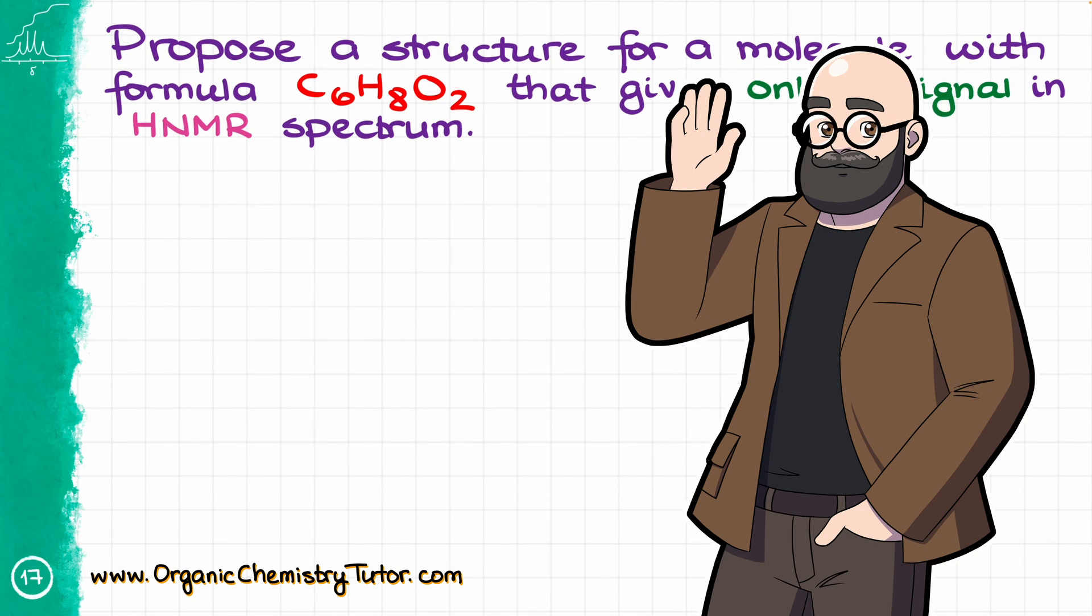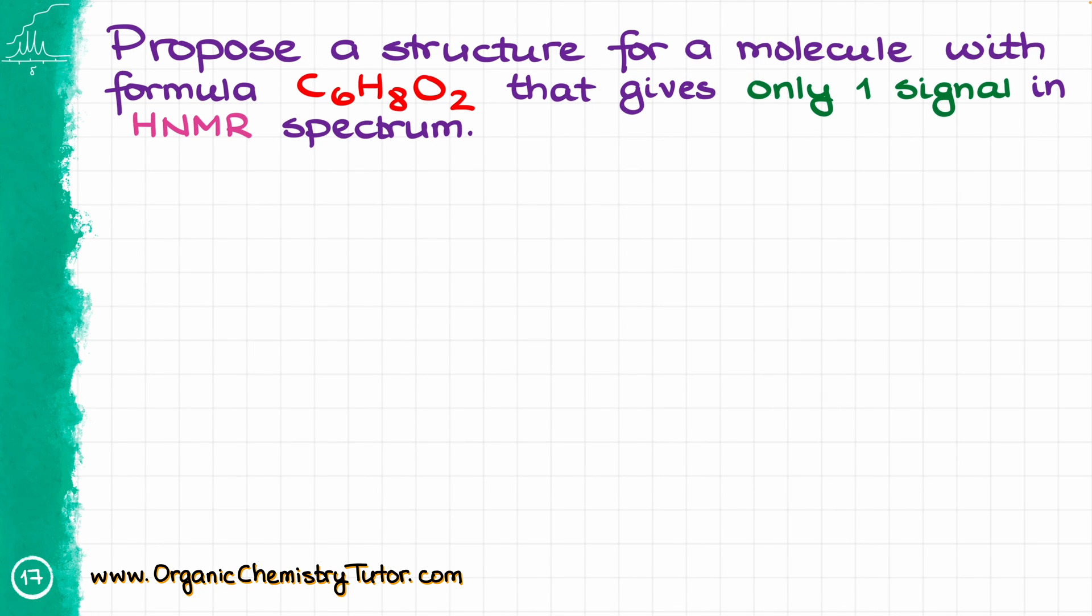Hello everyone, Victor is here, your organic chemistry tutor, and today I have another fun NMR question for you. So we have a molecule with a molecular formula C6H8O2, and we know that this molecule only gives one signal in HNMR spectrum, and we want to know what sort of a structure this molecule might have.